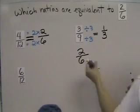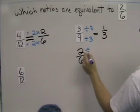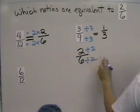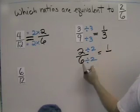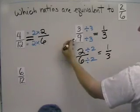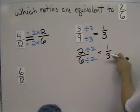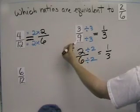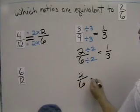Similarly, two-sixths — the numerator and denominator can both be divided by two. Two divided by two is one, and six divided by two is three. Since three-ninths reduces to one-third and two-sixths reduces to one-third, that tells us that three-ninths and two-sixths are equivalent to each other.